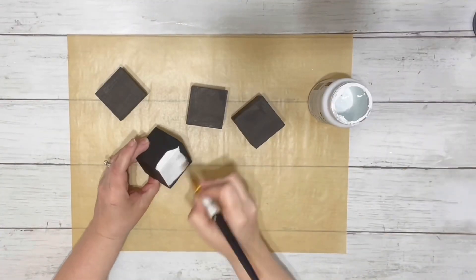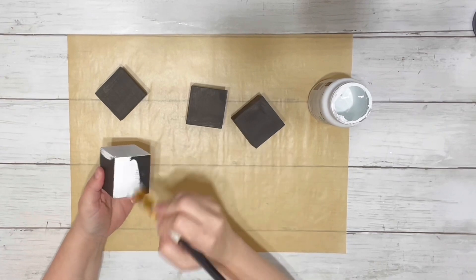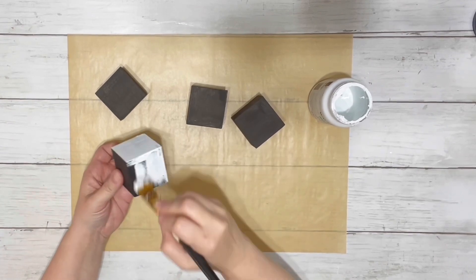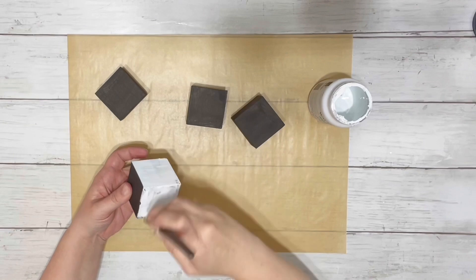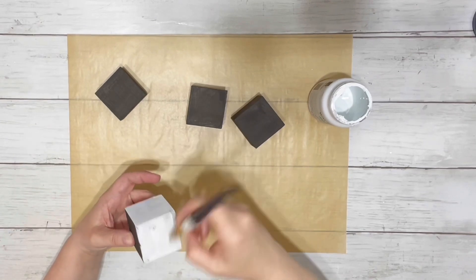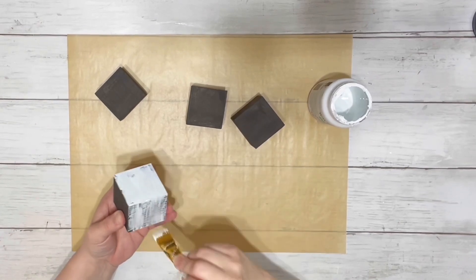After the dice were completely dry, I took my white chalk paint and did one coat covering all four of those. I did just do the one coat because I wanted some of that black paint to show through.